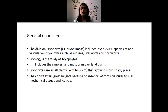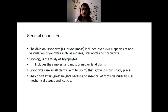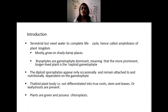They do not attain great heights because of the absence of vascular tissues, mechanical tissues, and cuticle. The distribution of bryophytes is mainly confined to plant surfaces, wall surfaces, or tree trunk surfaces. They are terrestrial but they need water to complete their life cycle, hence we call them amphibians of the plant kingdom. Most grow in shaded, damp places where there is sufficient water content and no direct sunlight.